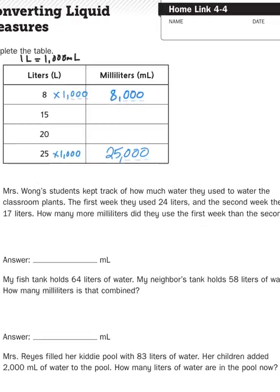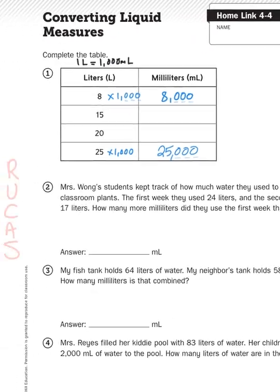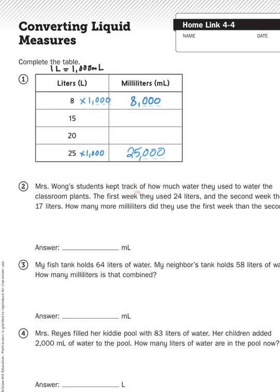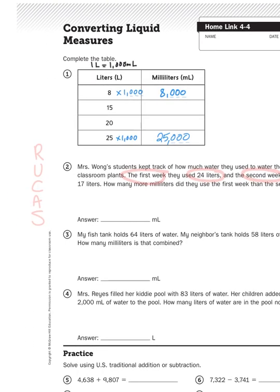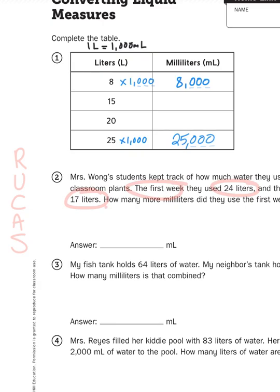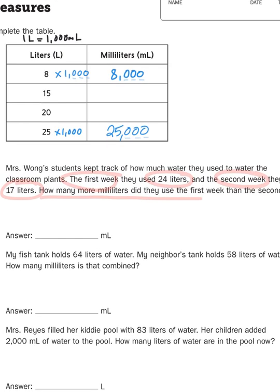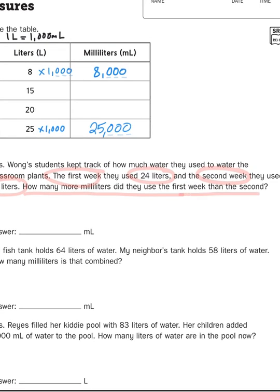Mrs. Wong's students kept track of how much water they used to water the classroom plants. The first week they used 24 liters. Second week they used 17 liters. How many more milliliters did they use the first week than the second?